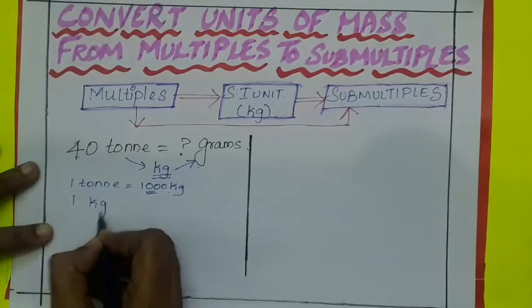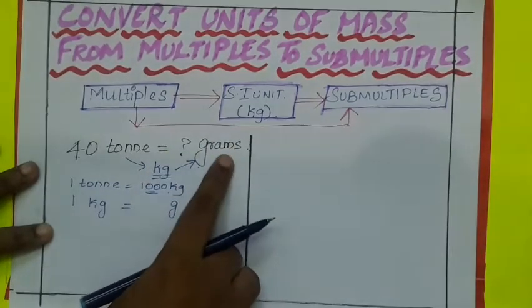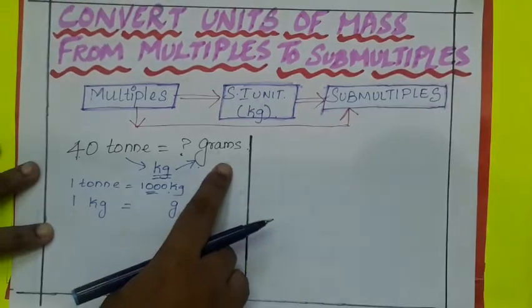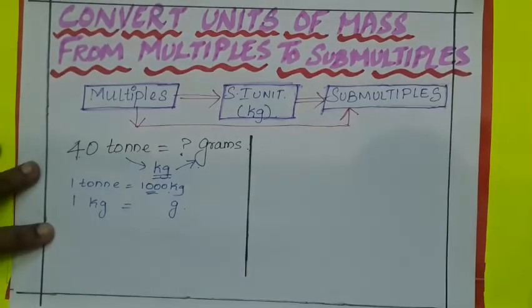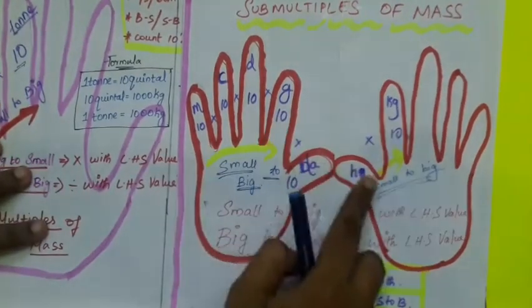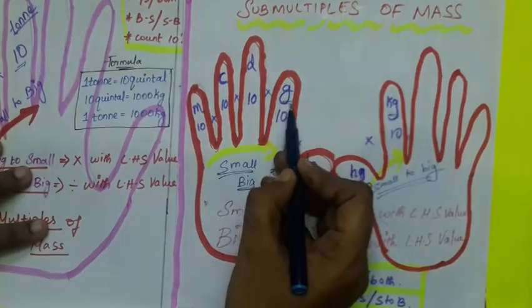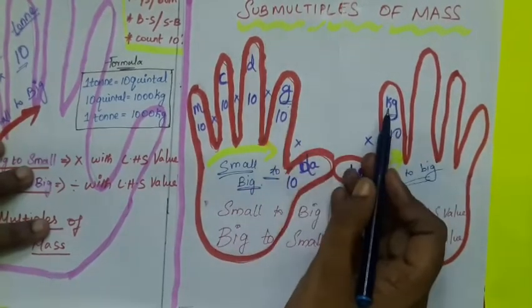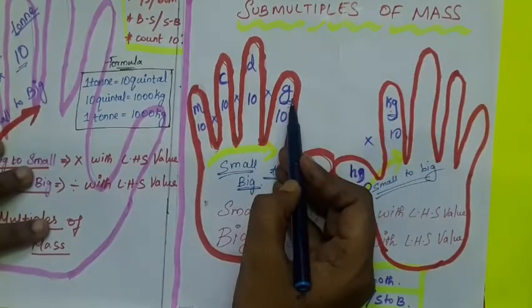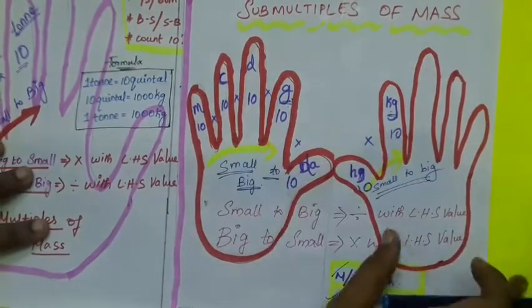Then convert kilogram into gram. 1 kilogram is equal to how many grams? To know this, use the mnemonic for submultiples because grams is submultiples. What is the mnemonic for submultiples? M, C, D, G, DA, H, K, G. Here kilogram is bigger unit and gram is smaller unit. So they ask to convert unit from bigger to smaller. If it is bigger to smaller, what sign we should use? Multiplication sign. Multiply with left hand side value.